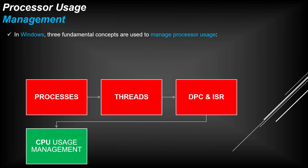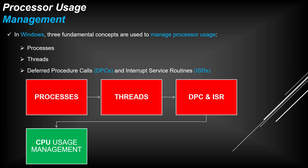In Windows we have 3 fundamentals that Windows uses to manage processor usage — CPU usage. The first is Processes, the second is Threads, and the third is Deferred Procedure Calls and Interrupt Service Routines, the topic we will cover today. As you see in the diagram, all three fundamentals manage CPU usage.